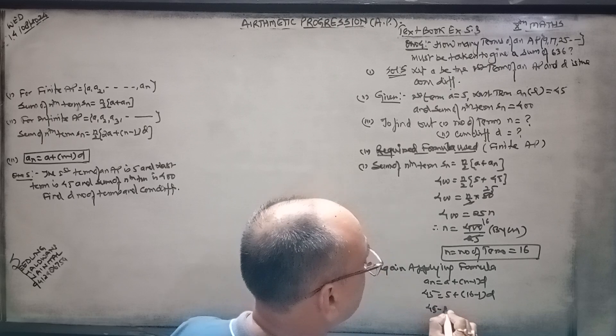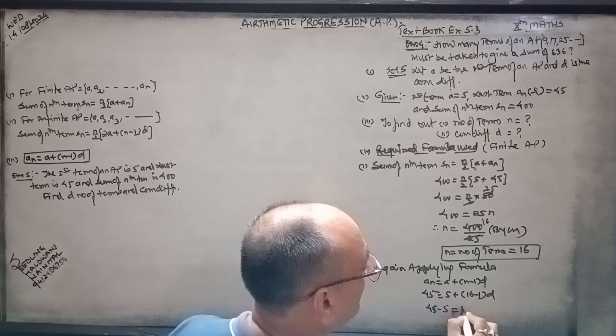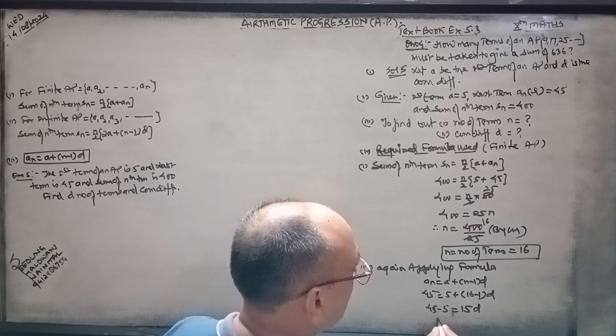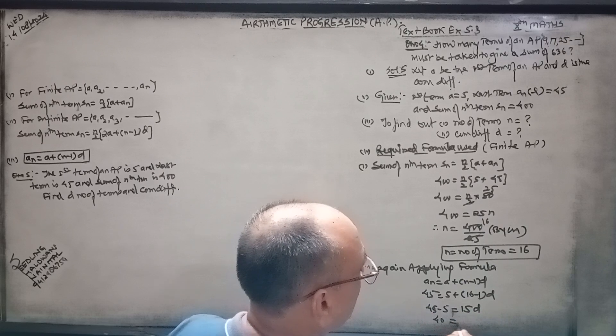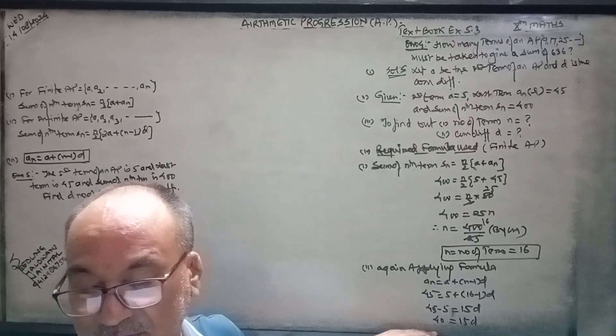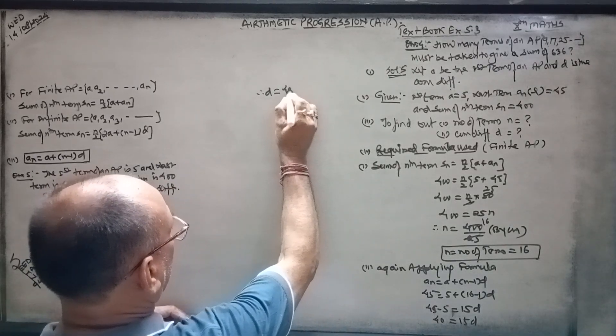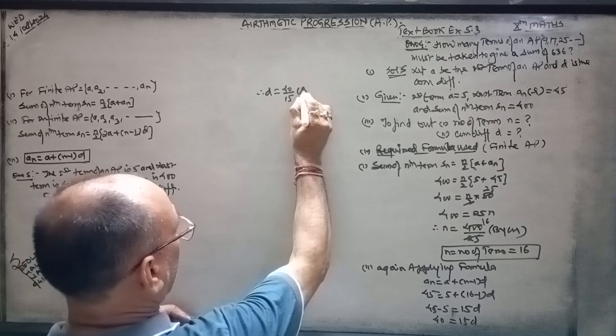45 minus 5 equals 15d. So 40 equals 15d. The value of d equals 40 upon 15.